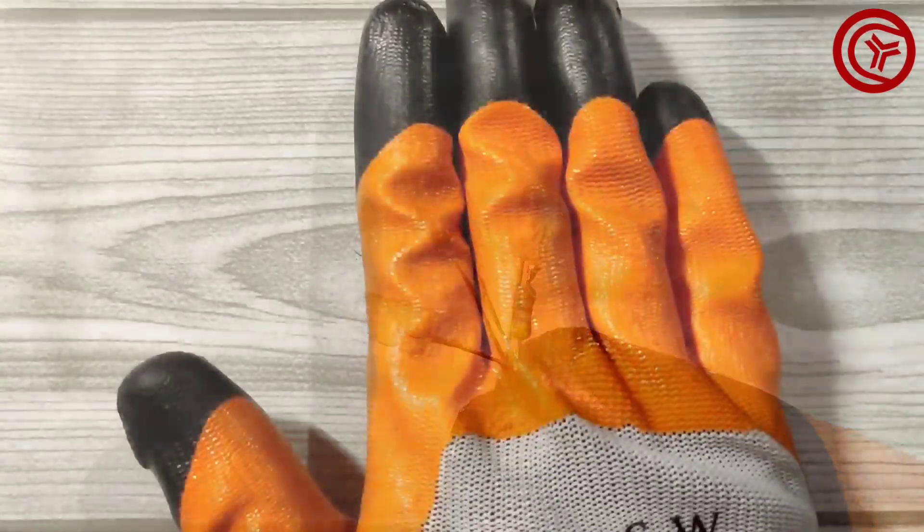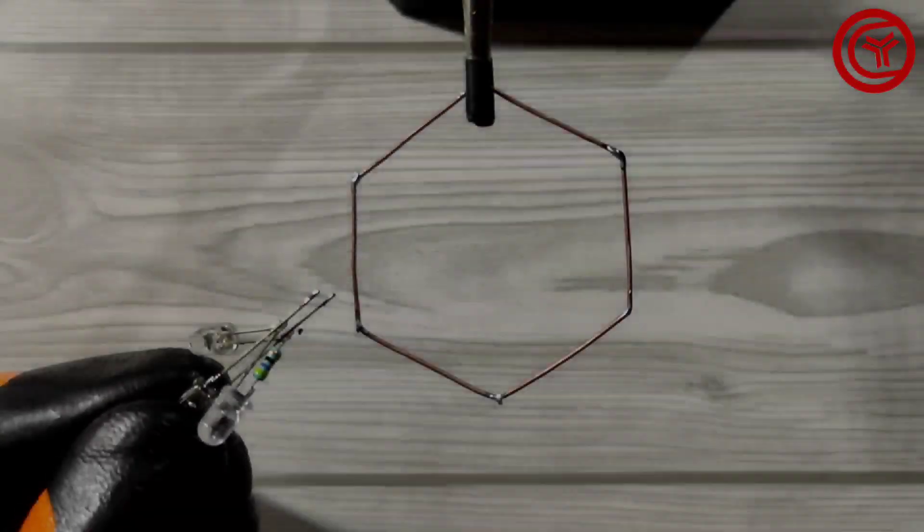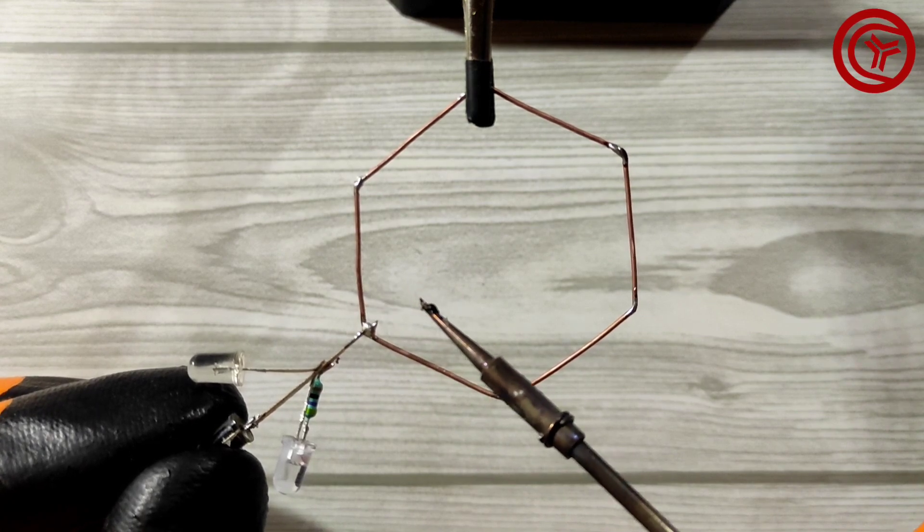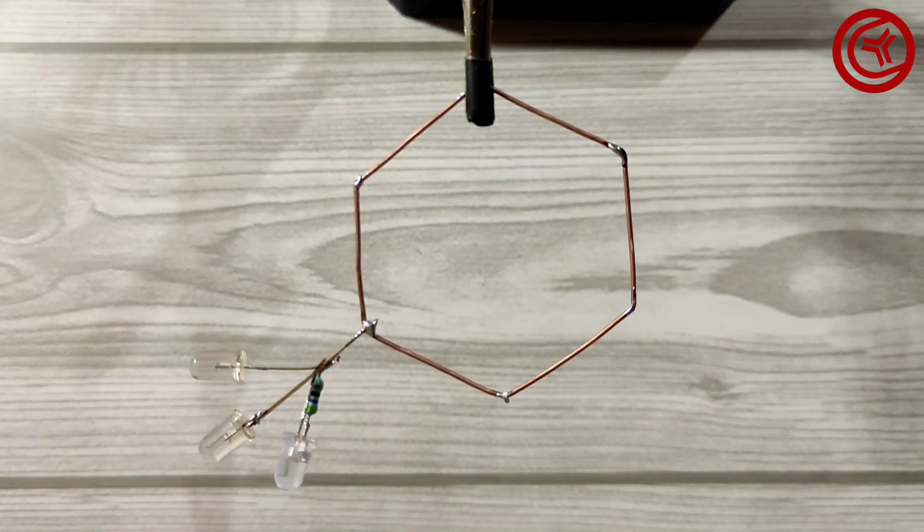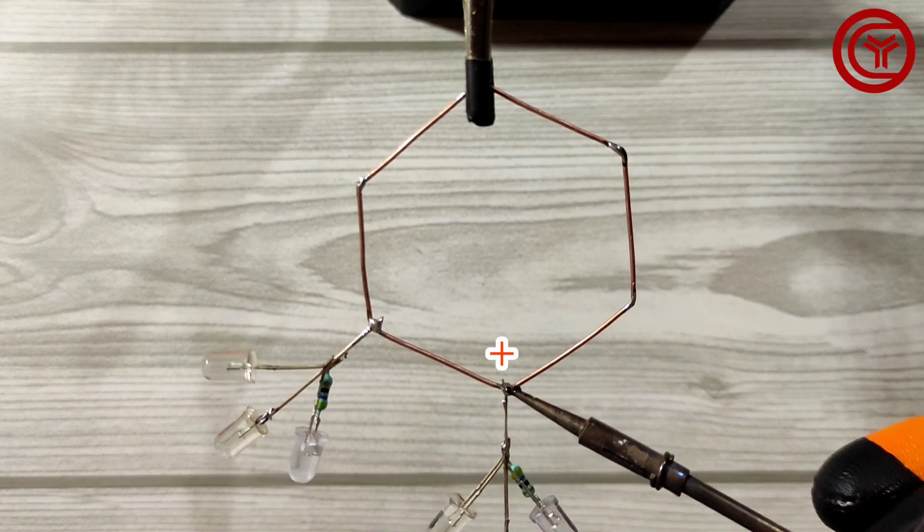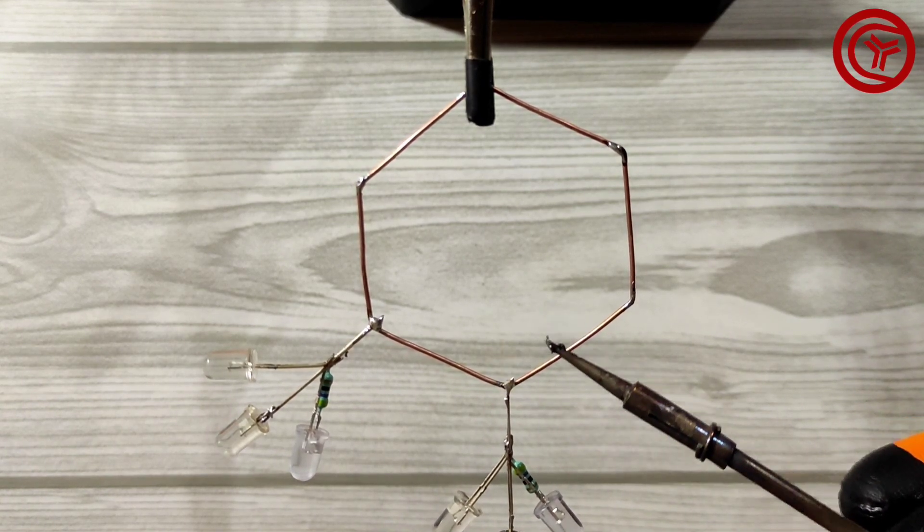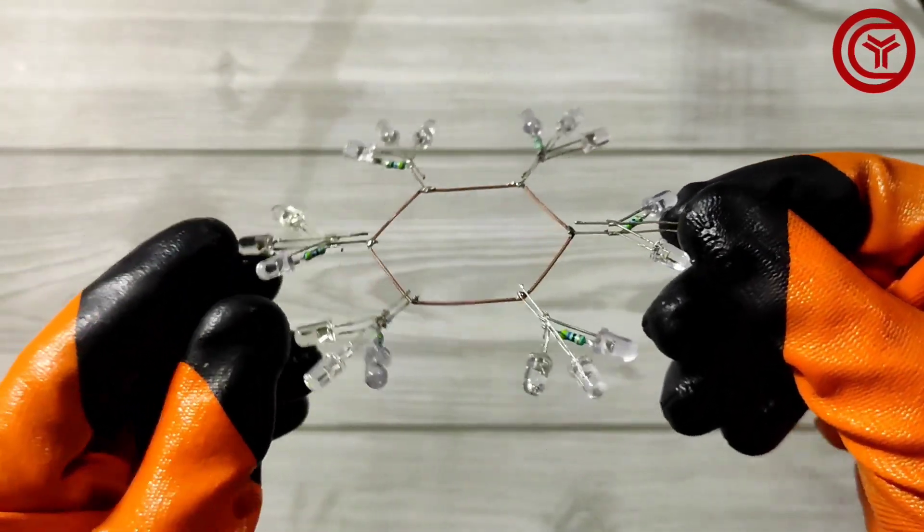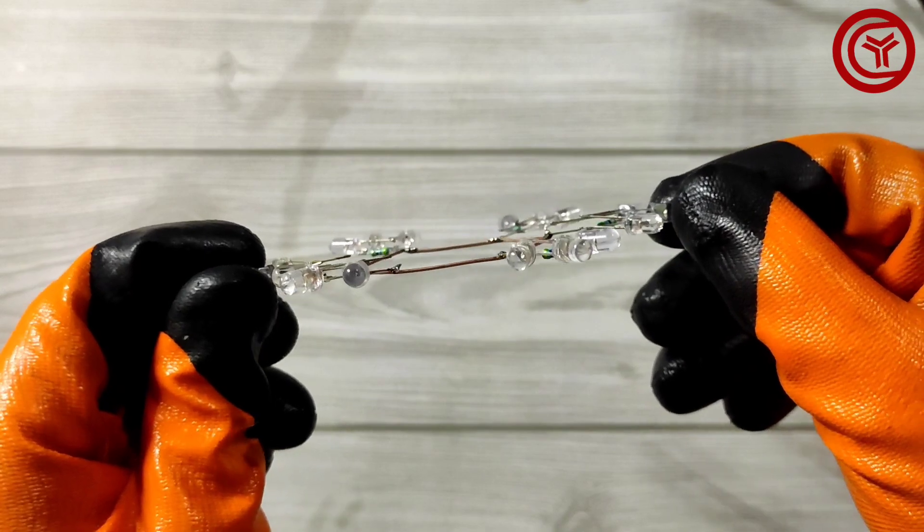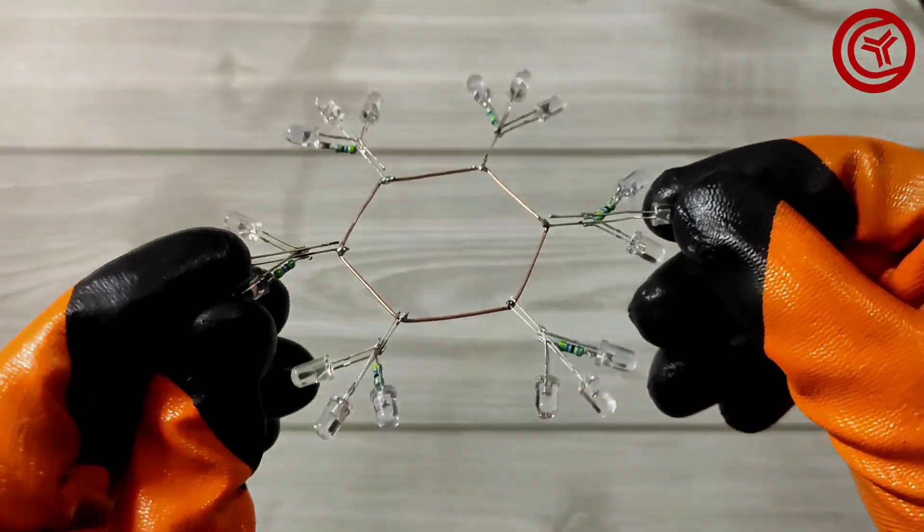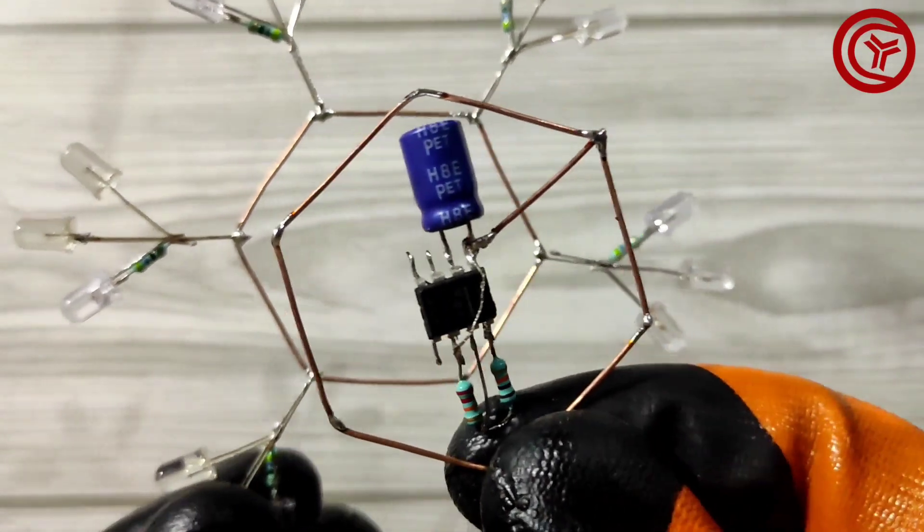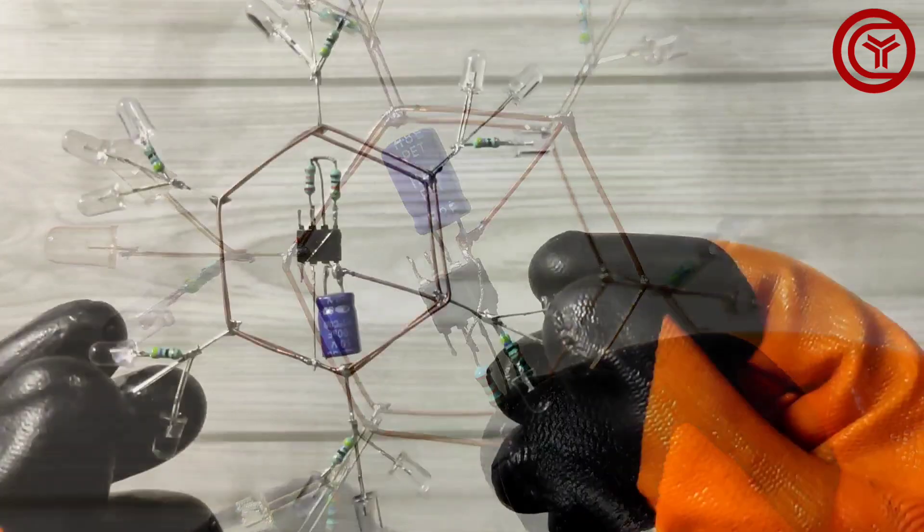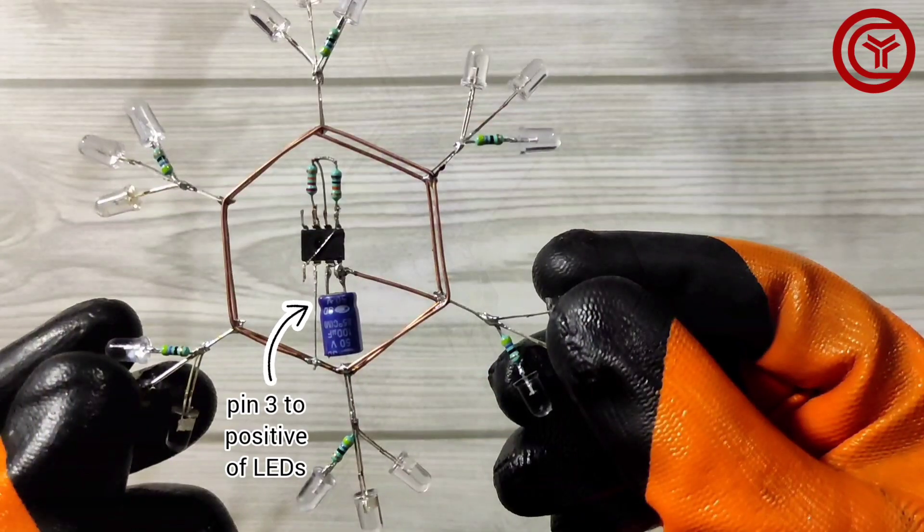With the same method make 6 pieces of same. Now take another ring and solder all LEDs positive on it. Then looks like this. Now take IC ring and solder all LEDs negative on it. Connect IC pin 3 to positive of LEDs.